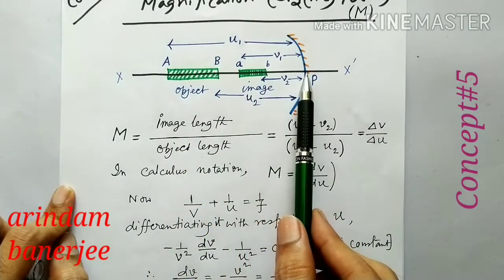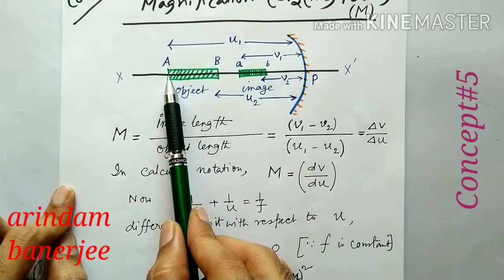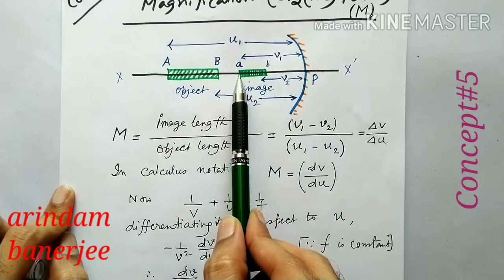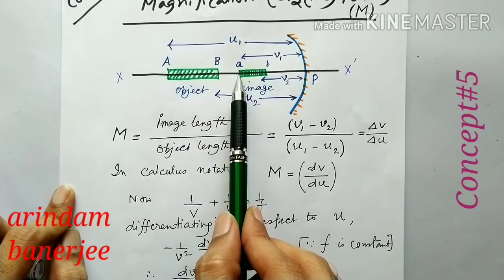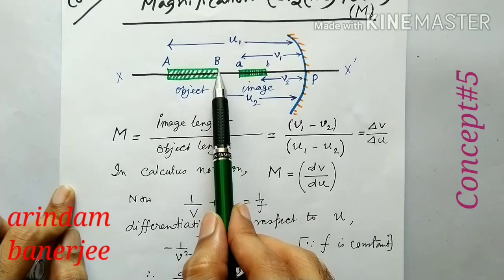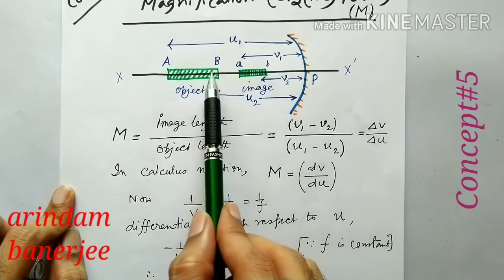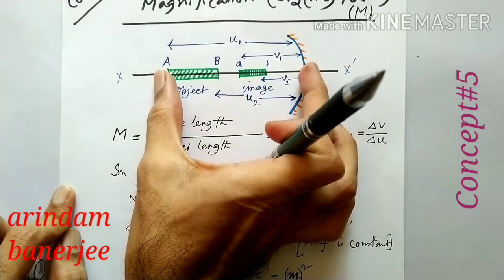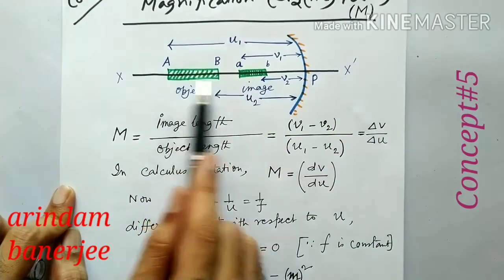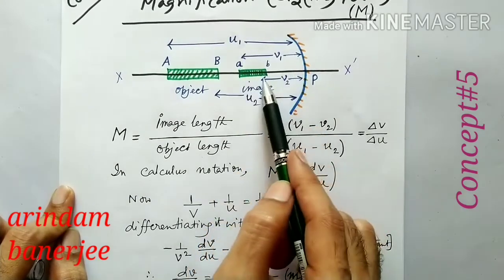Now, we have to look at the points. The distance to the first point is u1. For the object point A, the corresponding image point will be small a. And for the object point B, the image point will be small b. That means the length of the object is u1 minus u2, and the image length AB is v1 minus v2.